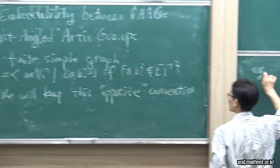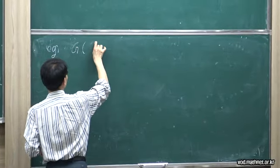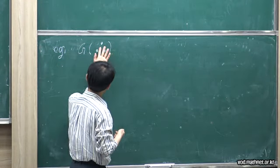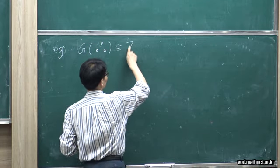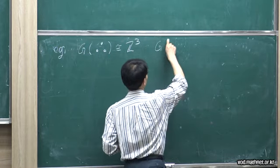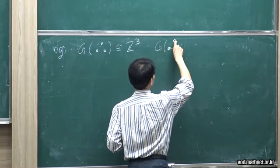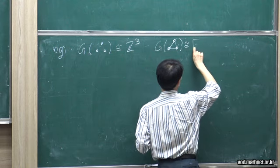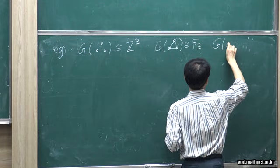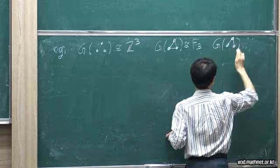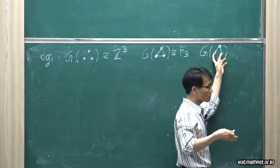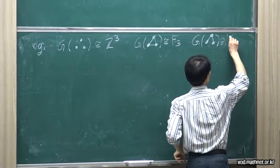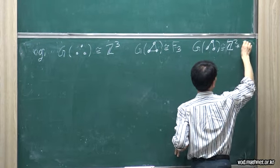For example, if we have three vertices and there is no edge, then we have three generators. This is isomorphic to the free abelian group. And if we have a complete graph, then we have no relation, so this is isomorphic to the free group. And if we have this graph, then you can see that these two vertices correspond to Z² and this one is Z, and we have a direct product. So this is isomorphic to Z² × Z.